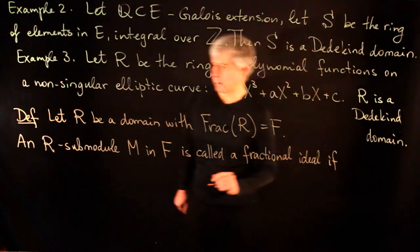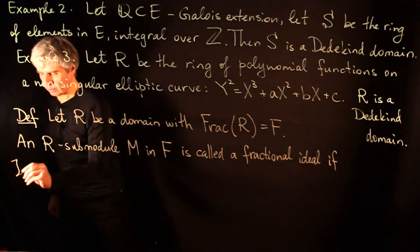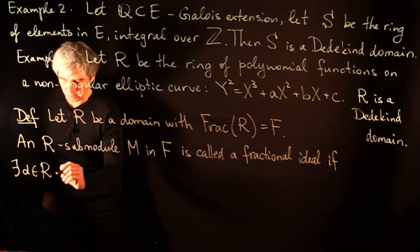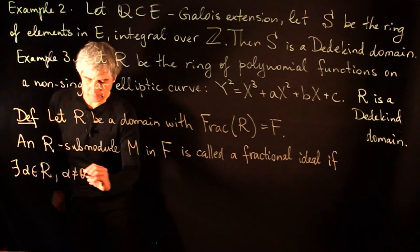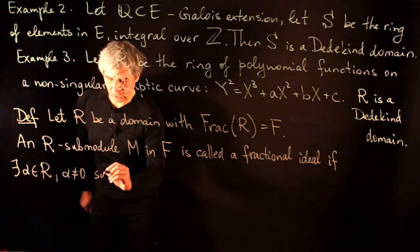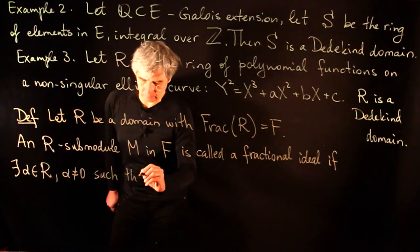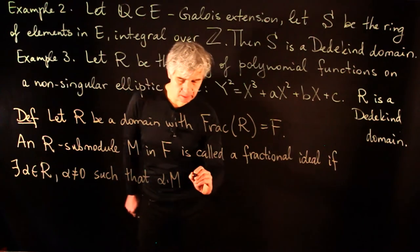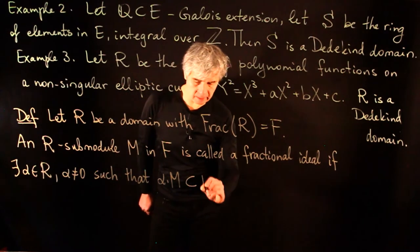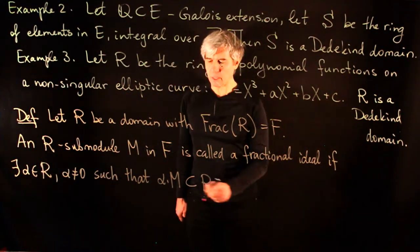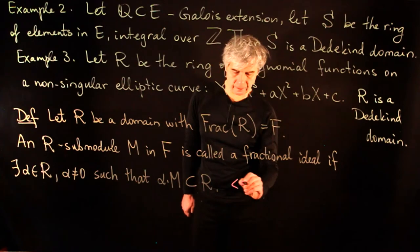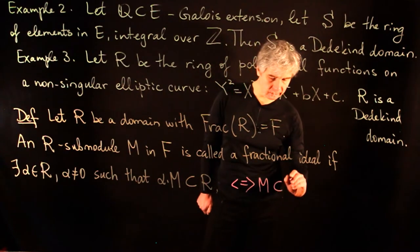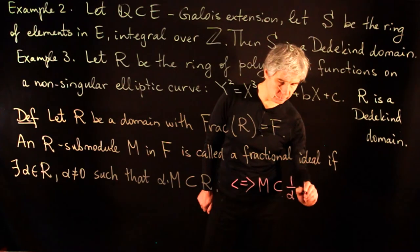if there exists a nonzero alpha in R such that alpha times M is inside R. The last property says that M is inside (1/α)·R.